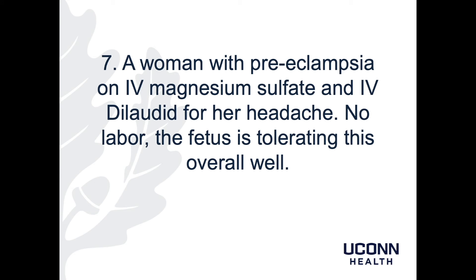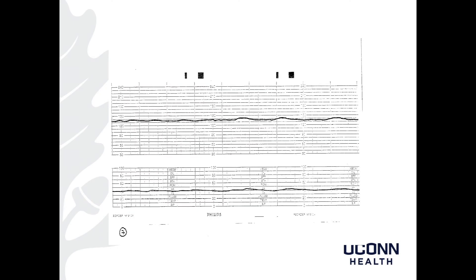Patient 7 is a woman with preeclampsia on IV magnesium sulfate who also received IV dilaudid for her headache. She's not in labor and the fetus is tolerating this overall pretty well. My read: baseline of 135s, minimal variability, no accelerations, no decelerations. This is Category 2. The dilaudid and magnesium are probably making that baby feel pretty blah — the baby's not moving around a lot, so there's very little change in heart rate. But the baseline is normal.